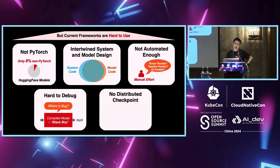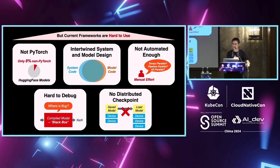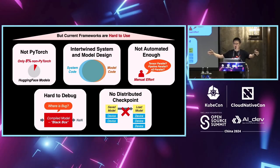The last challenge is that there is no distributed checkpointing support in these prior frameworks. The situation we face is that we first use thousands of devices to pre-train a model from scratch to a certain checkpoint, and then we need to fine-tune, which is usually done at a smaller scale. This means we need to save a checkpoint from a very large cluster and load it onto a smaller cluster. Without distributed checkpointing support, this is a very inconvenient process.